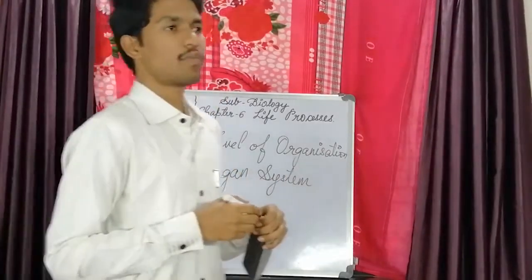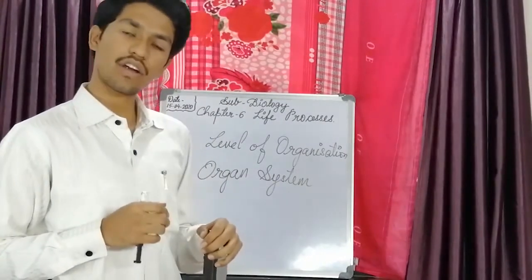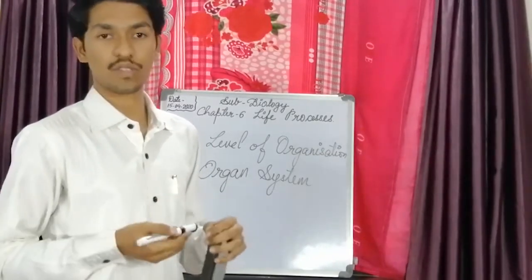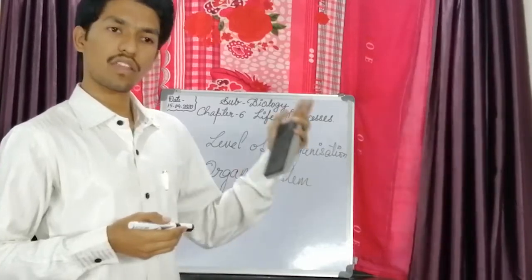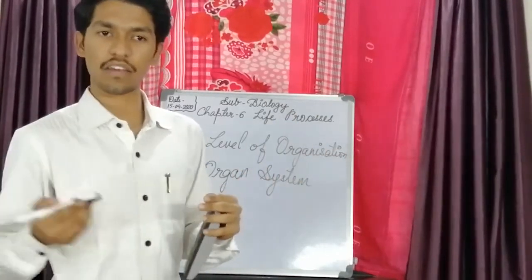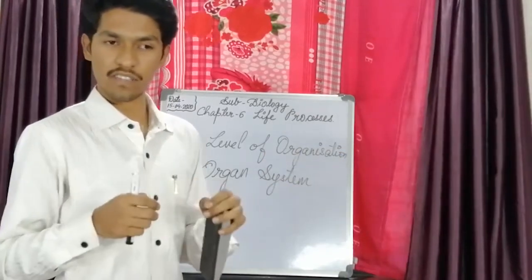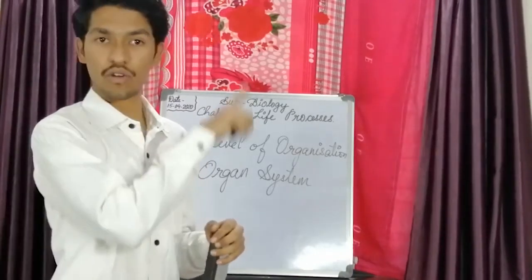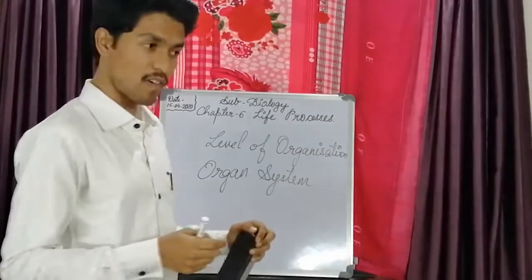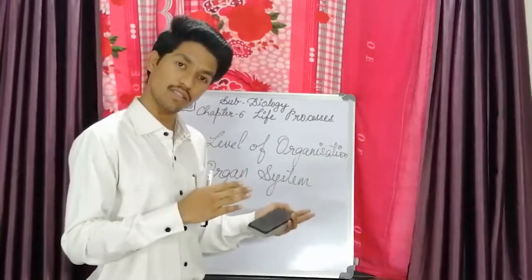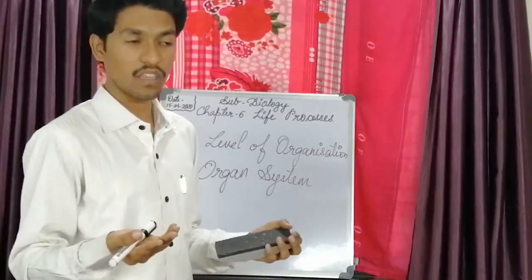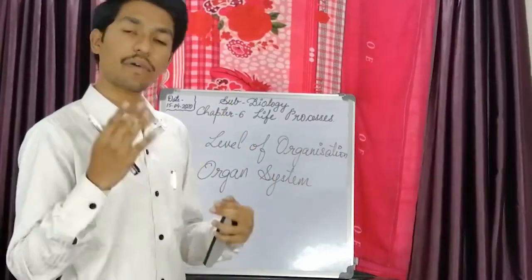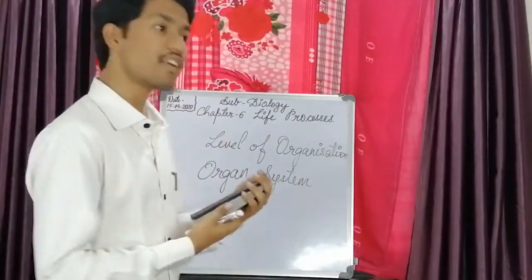For example, in a family of five members, you cannot expect a single person to do all the work. Your mother does cooking, the father goes to the market, children keep the clothes, the grandmother cleans the vegetables — each member does different functions, and a single person cannot do all these functions together. In the same way, in our whole body there are different organs which perform different functions. When these organs perform different functions, there are different processes taking place in our life. For carrying out these functions, there are different systems.